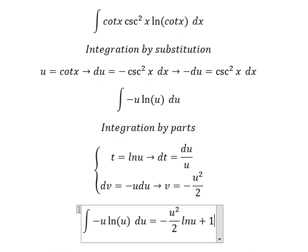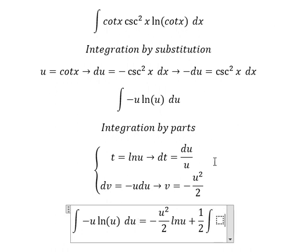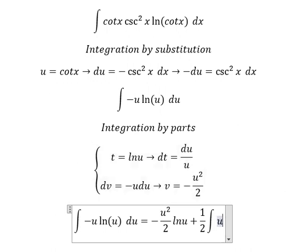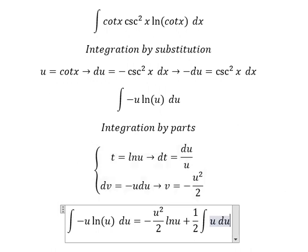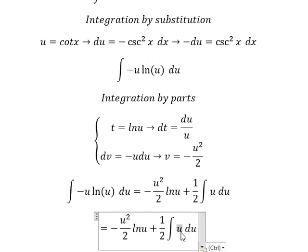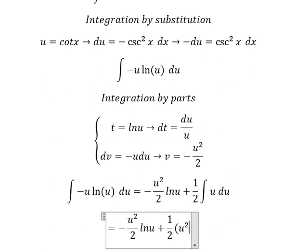So we have -u²/2 ln(u) + 1/2 times the integral of u du, which equals -u²/2 ln(u) + 1/2(u²/2) + C.